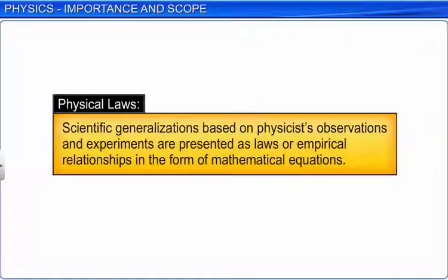Apart from finding the facts through observation and experiments, physicists always try to summarize these facts as laws or empirical relations in form of mathematical equations. These are known as physical laws.